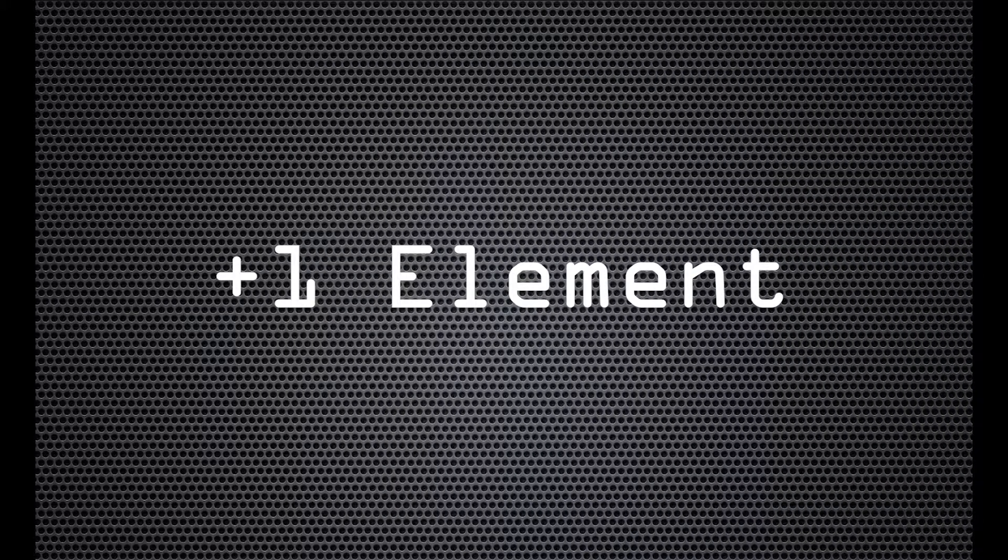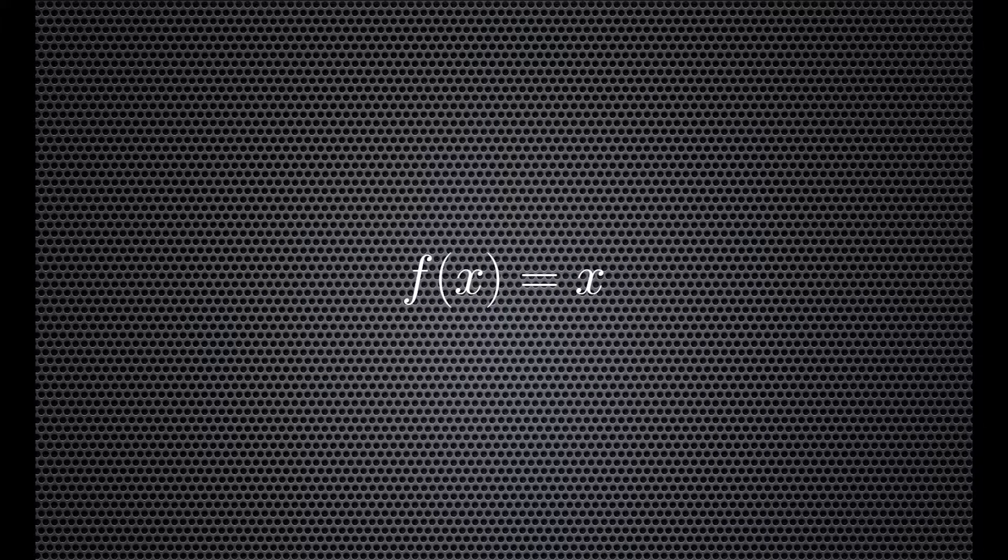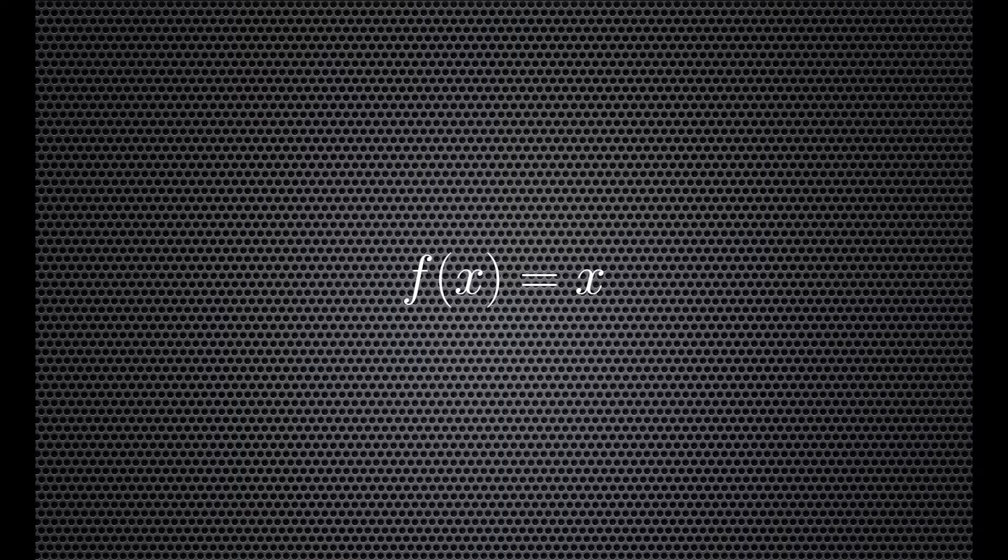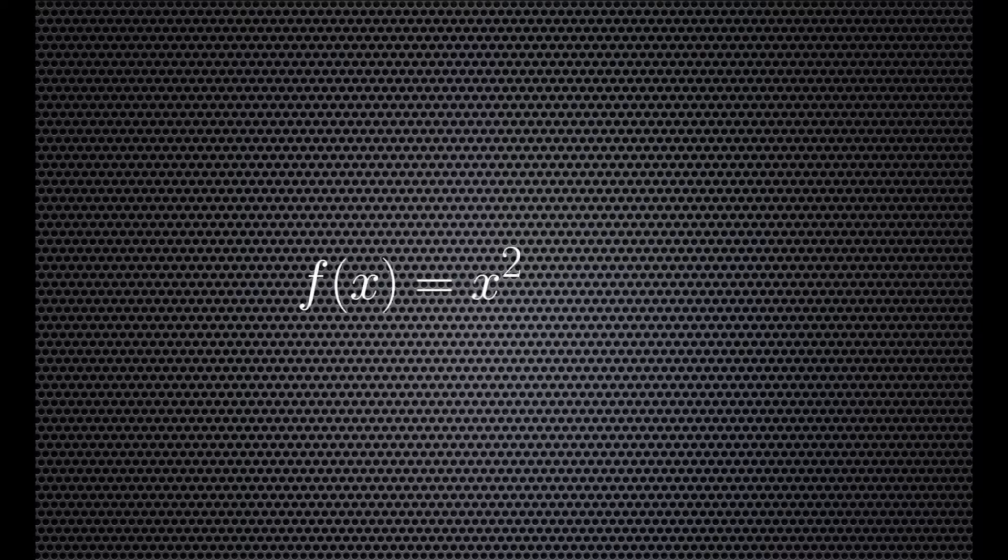For our plus one element, we have created some data to state estimate. We first use the linear function f of x equals x. This is to show that even in perfect conditions, the unscented Kalman filter is still only an estimate.